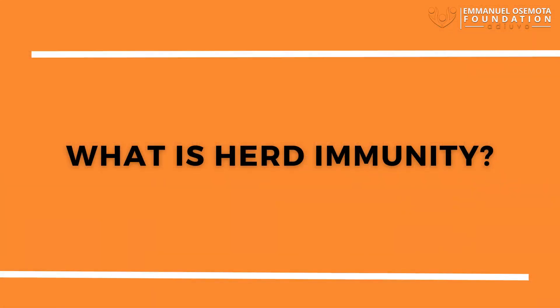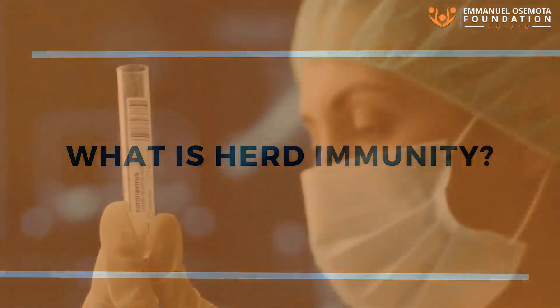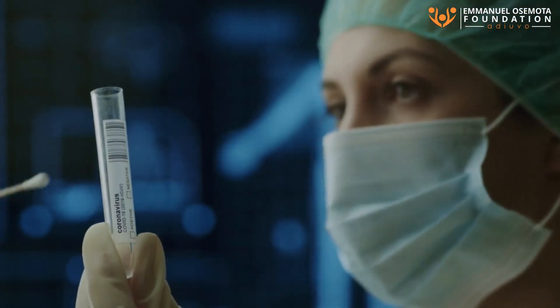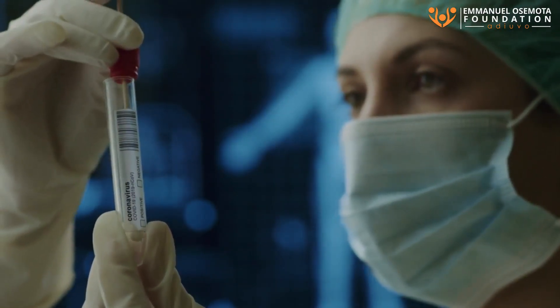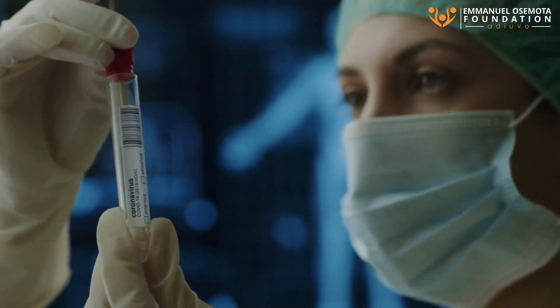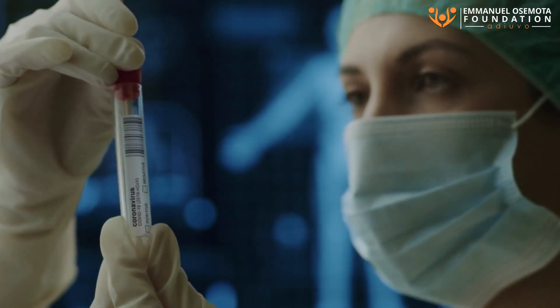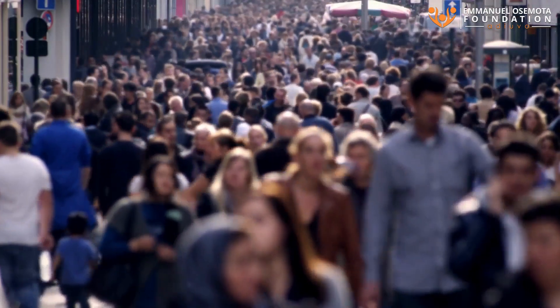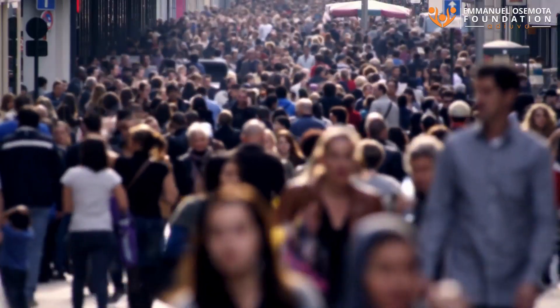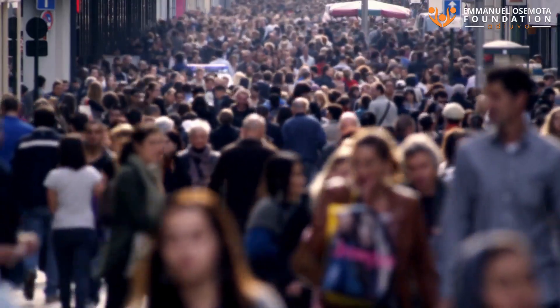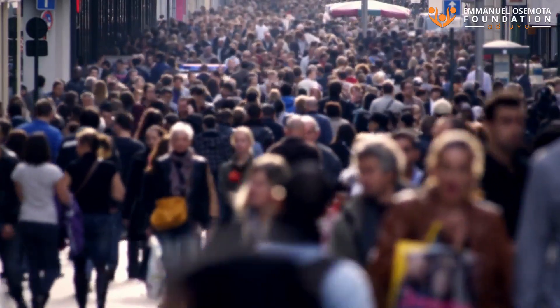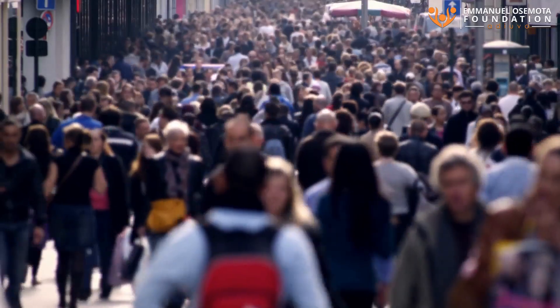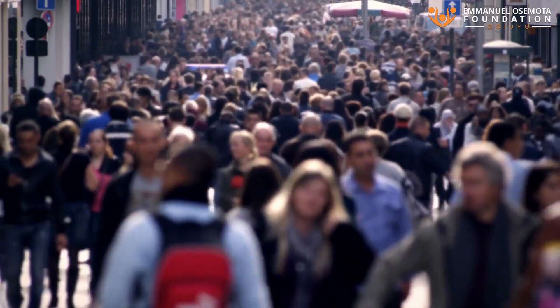What is herd immunity? Herd immunity, also known as community immunity or population immunity, is an indirect form of protection from infectious diseases. It occurs when a specific proportion of a population becomes immune to an illness. Once a threshold is reached, the spread slows down or stops altogether.